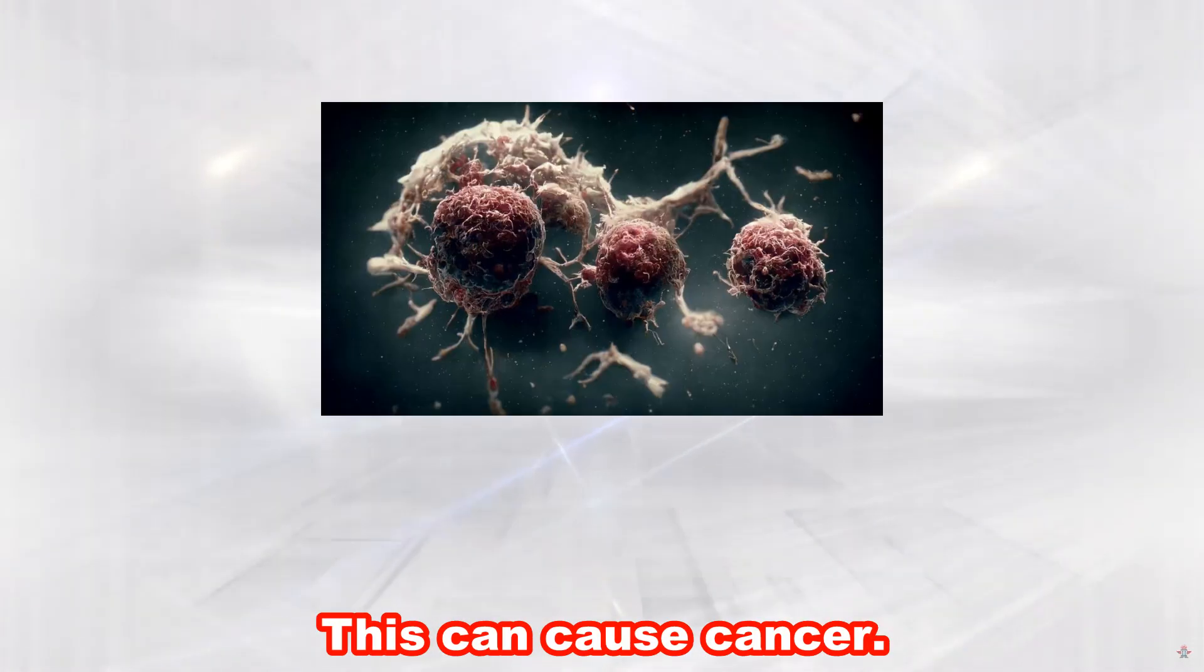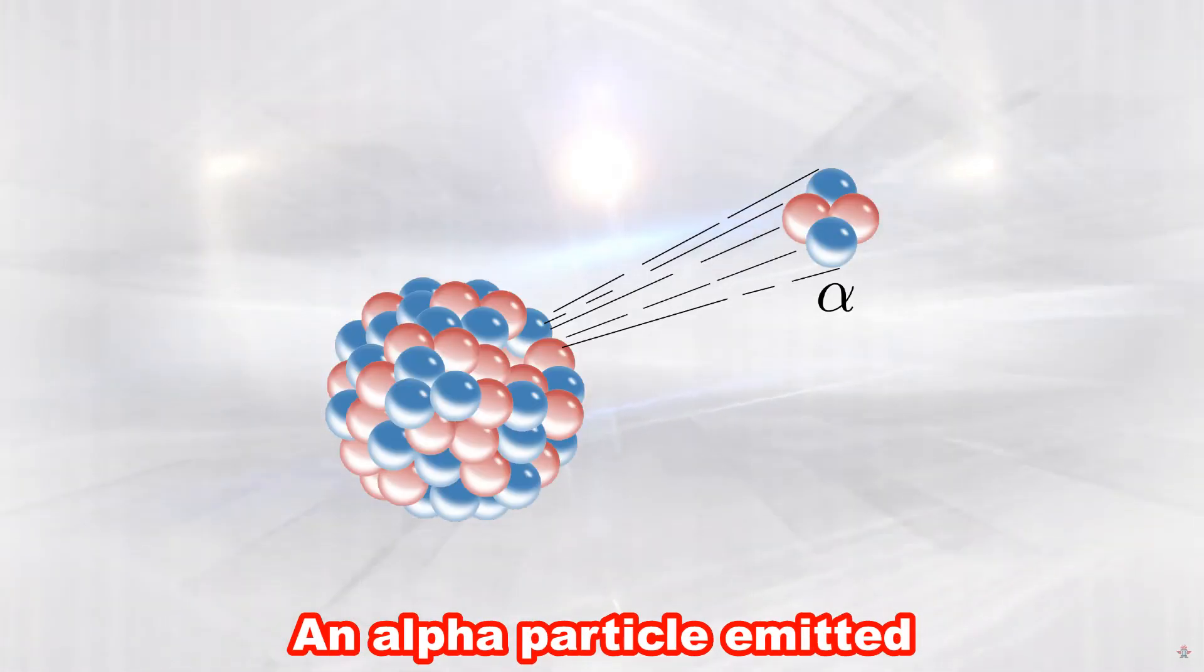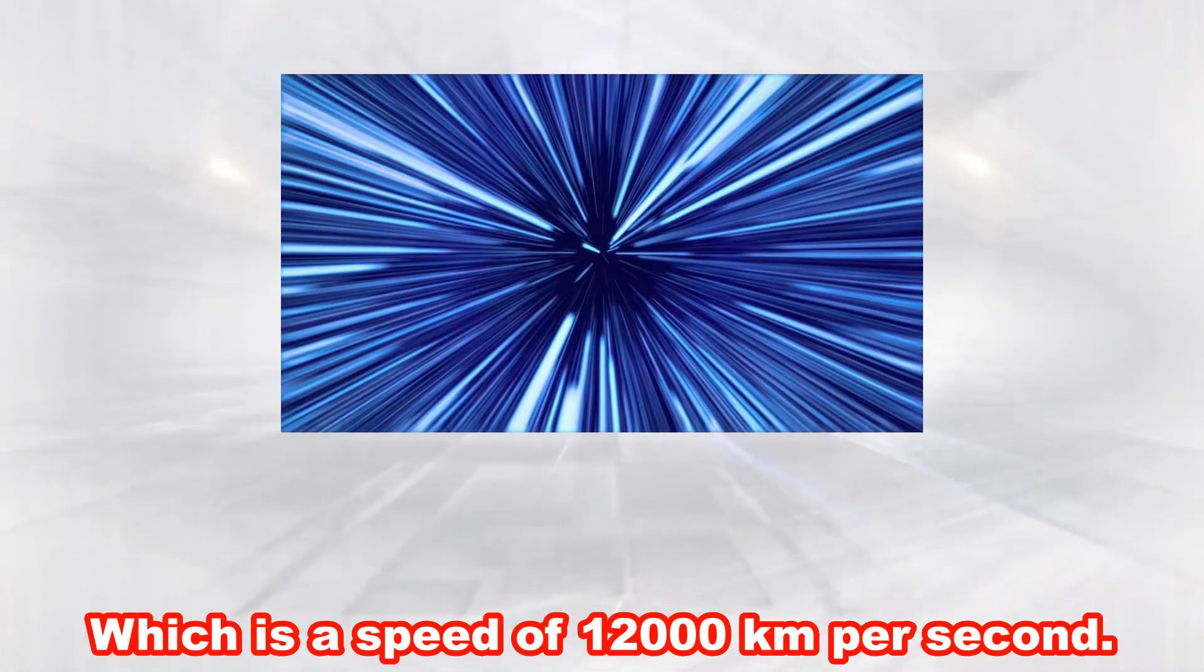This can cause cancer. An alpha particle emitted from alpha decay has the velocity of 4% the speed of light, which is a speed of 12,000 kilometers per second.